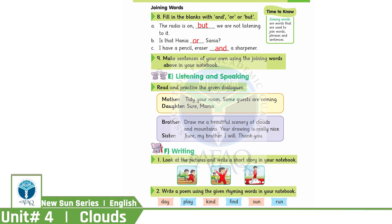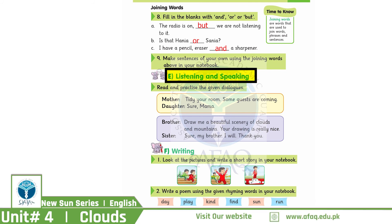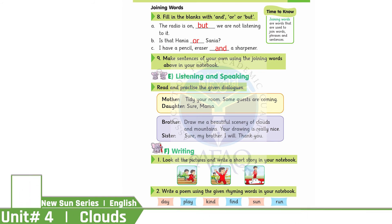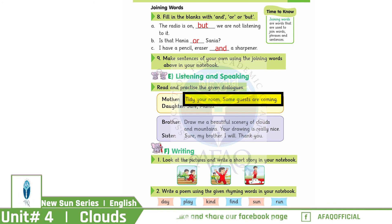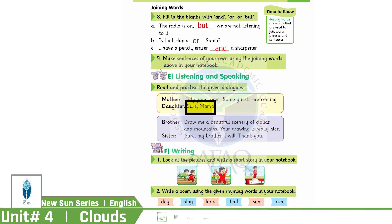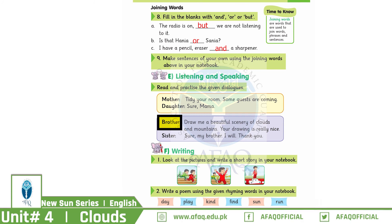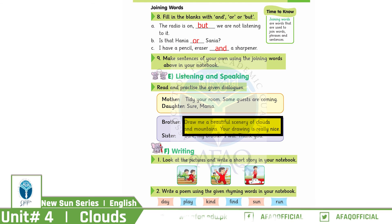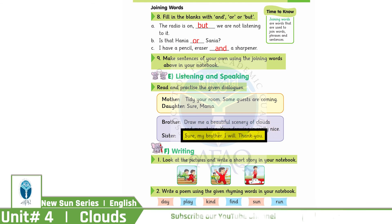Let's move on to our next task: Listening and Speaking. Read and practice the given dialogues. Practice these dialogues with your partner — your mother, father, sister, or brother. Let's practice once: Mother: 'Tidy your room, some guests are coming.' Daughter: 'Sure, mama.' Brother: 'Draw me a beautiful scenery of clouds and mountains, your drawing is really nice.' Sister: 'Sure, my brother, I will. Thank you.'